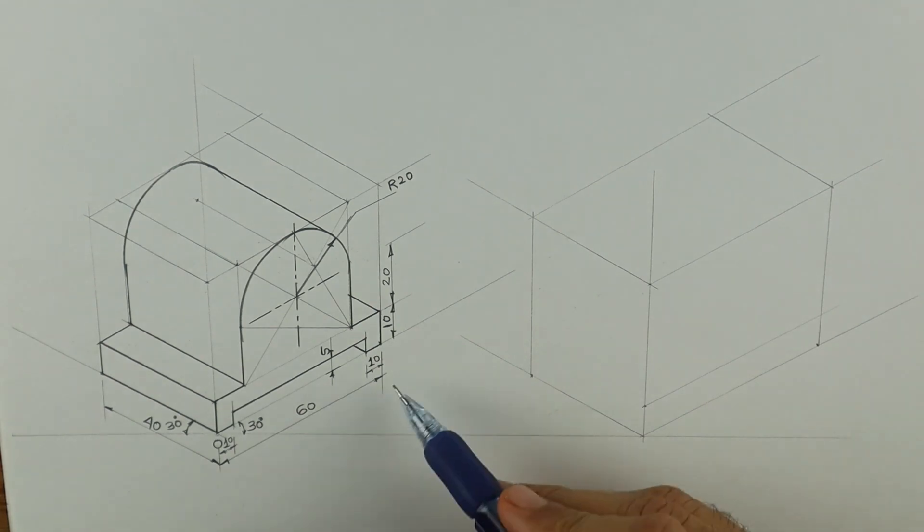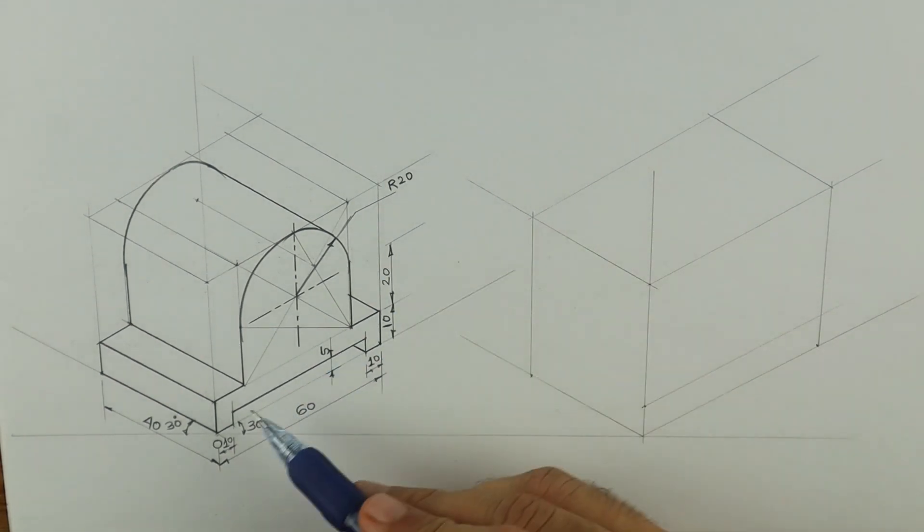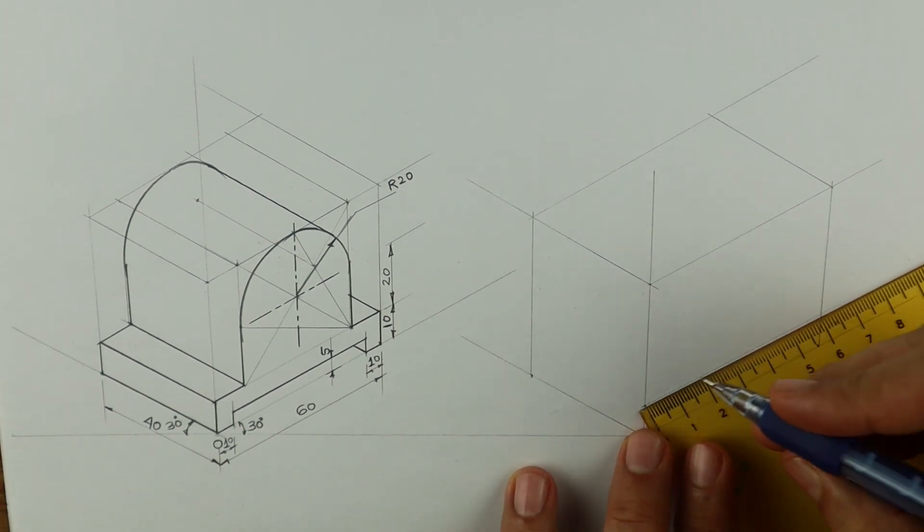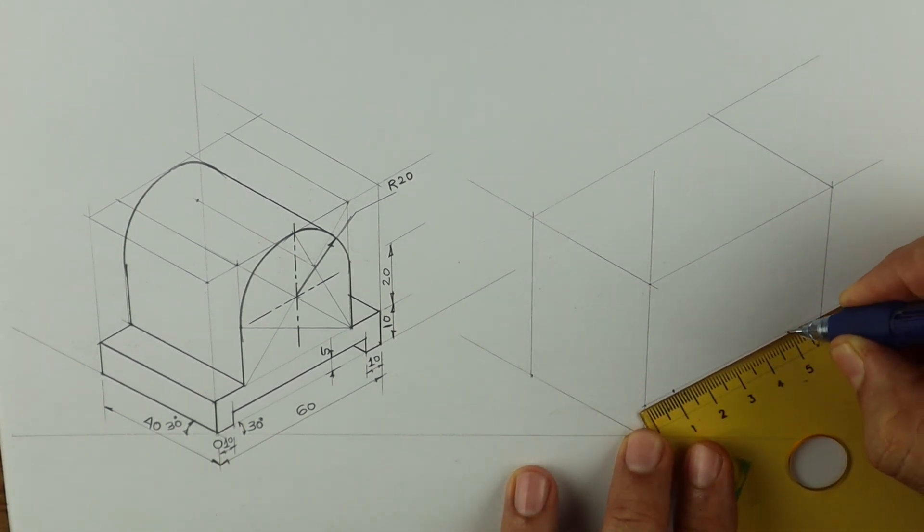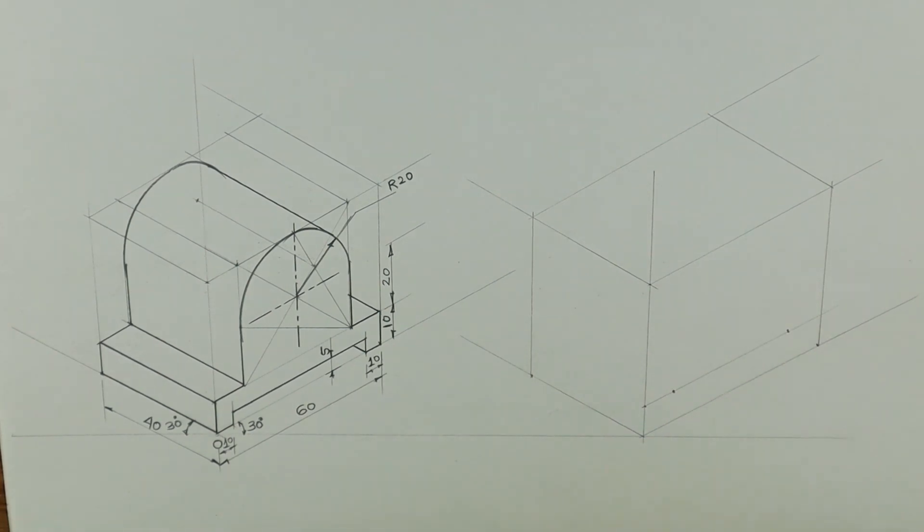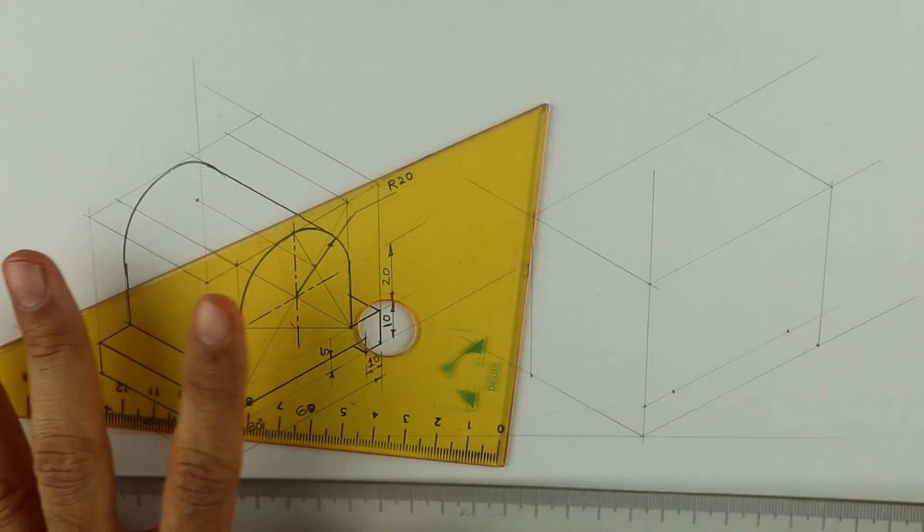We'll extend the line. Then how much is this? 60 minus 40 equals 10, so 10 on both sides. Radius 20, so it is 40. Total is 60. So both sides we need to take 10 on both sides to get the required dimension.